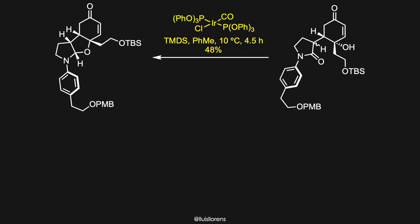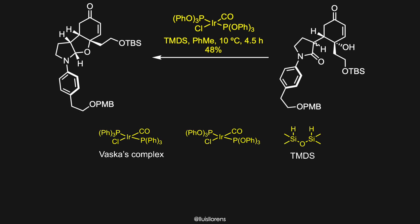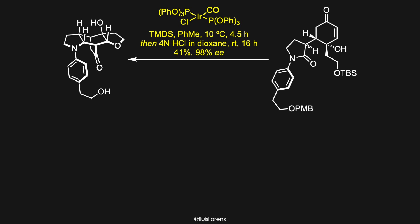The final transformation involved the key reductive cyclization to form a hemiaminal from the alcohol-tethered lactam. The desired hemiaminal was obtained by a chemoselective iridium-catalyzed reduction of the amide to produce an acylated hemiaminal. This compound eliminates to form the corresponding iminium ion, to which the pendant alcohol acts, furnishing the cyclic hemiaminal. For this reaction, a modified Vaska's complex and acylsilane reductant tetramethyldisiloxane were used. Directly treating the reaction mixture with dry HCl in 1,4-dioxane achieved the desired reactivity.